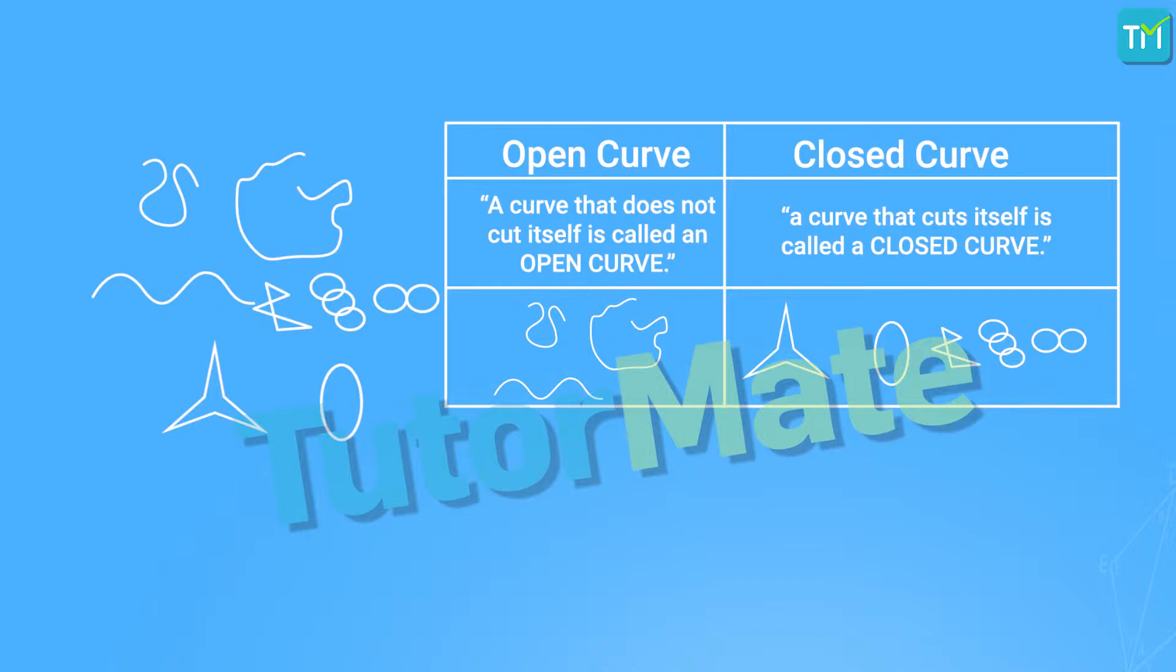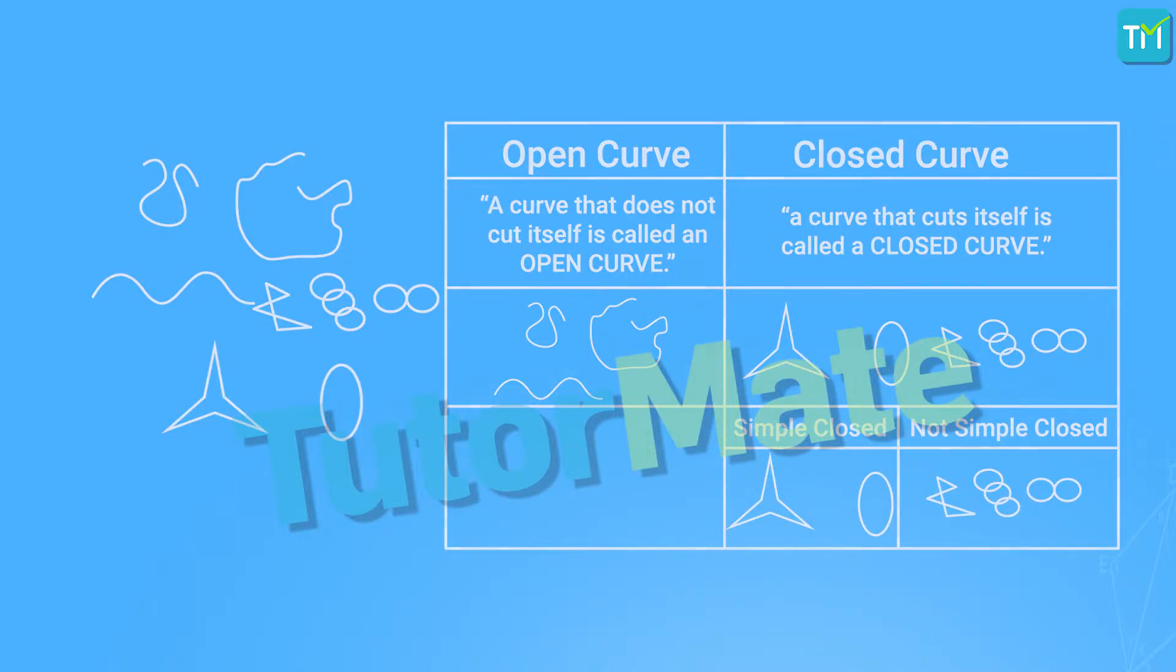Now, closed curves are further categorized as simple closed curves. We define a simple closed curve as a curve that does not pass through one point more than once. So, can we identify simple closed curves from these figures? These are the simple closed curves, while these aren't.